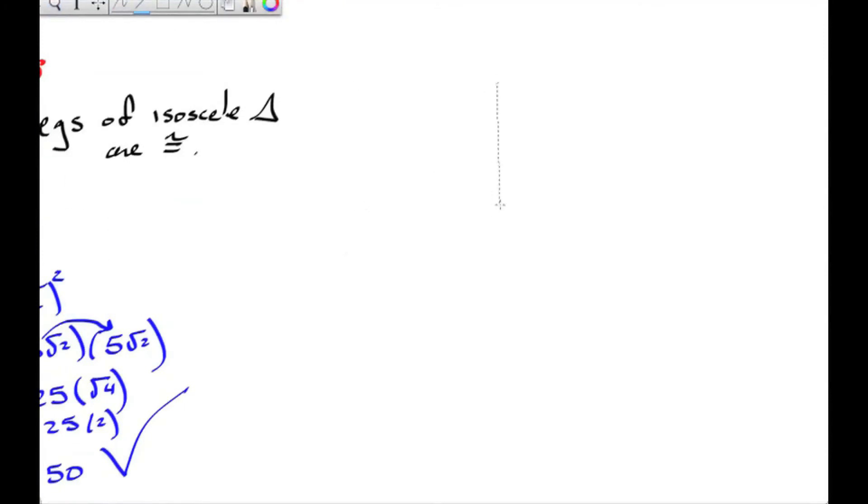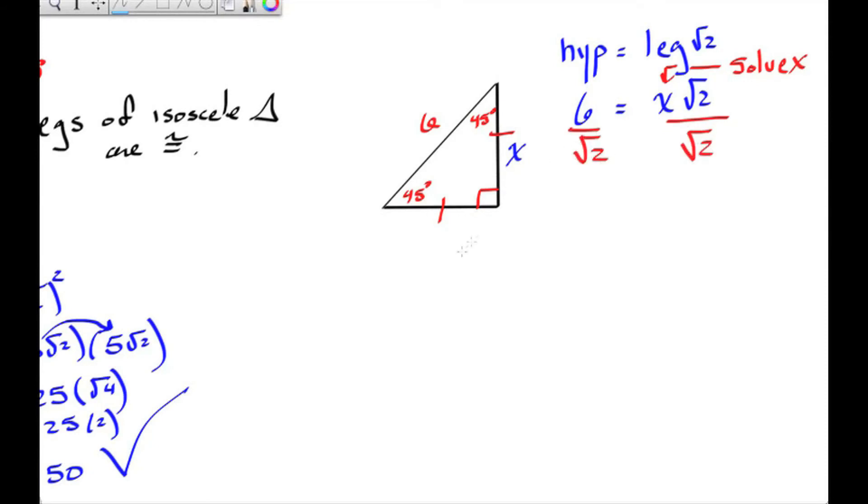So let's try one more problem. We have a 45-45-90 triangle, except this time we know the hypotenuse is 6, and we don't know the leg. So we're going to use the same equation, substitute 6 for hypotenuse, and solve for x by dividing root 2 to both sides. But we need to do something called rationalizing the denominator, which means I need to multiply root 2 top and bottom.